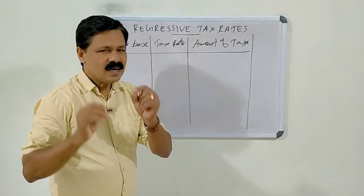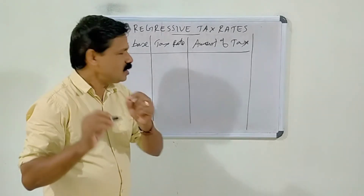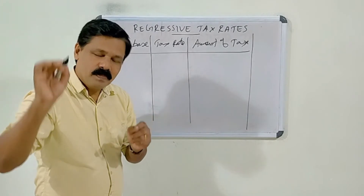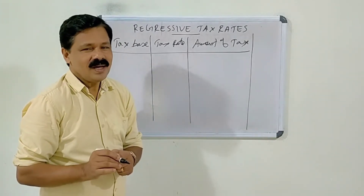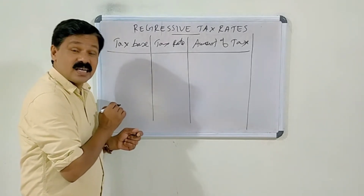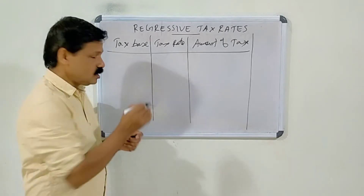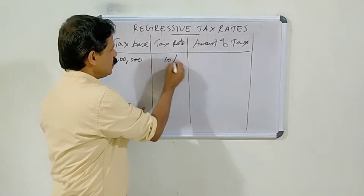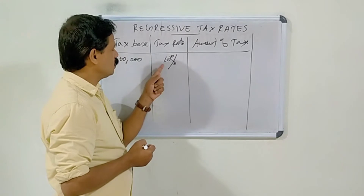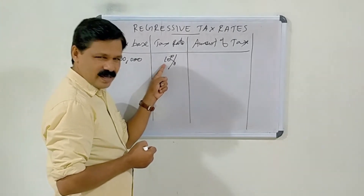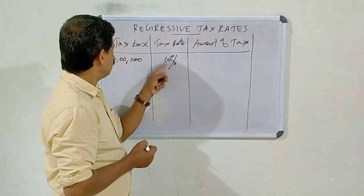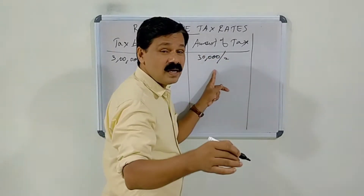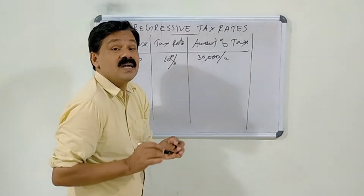In India, those who possess annual income worth more than 2.5 lakhs should pay direct tax to the government. Supposing the taxable income of a particular taxpayer is 3 lakhs, and the rate of taxation charged is 10%, this taxpayer has to pay 10% of 3 lakhs — that is, 30,000 rupees — to the government in the form of personal income tax.